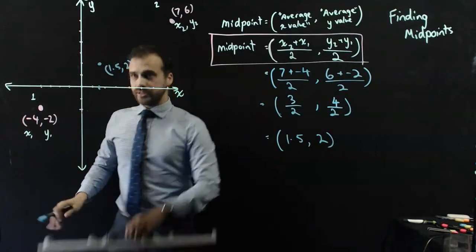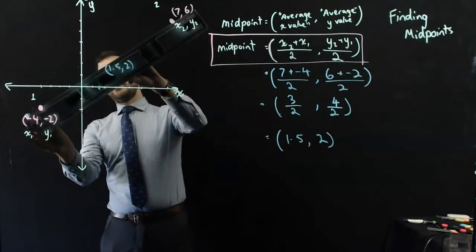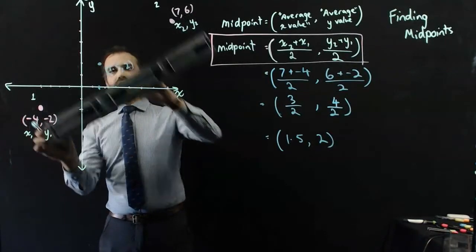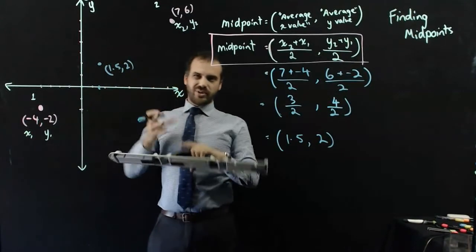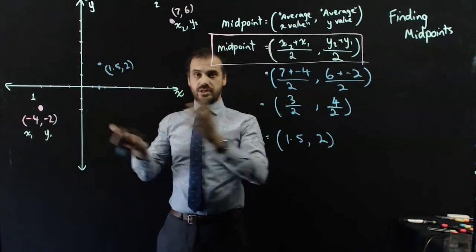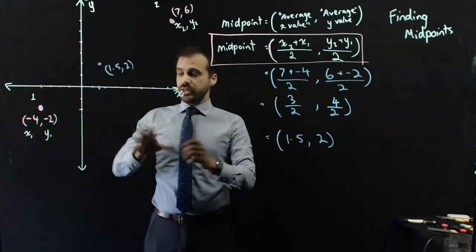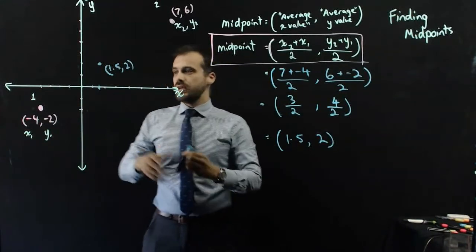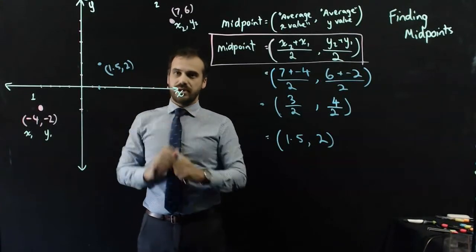Does that look about right? Let's see, get my ruler out. It's pretty close. You can see it's a little bit off. The reason it's off is because I drew this Cartesian plane without a ruler, I just kind of marked it up myself, but I think that's about right.